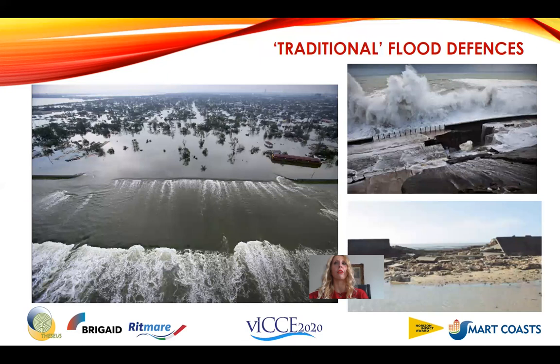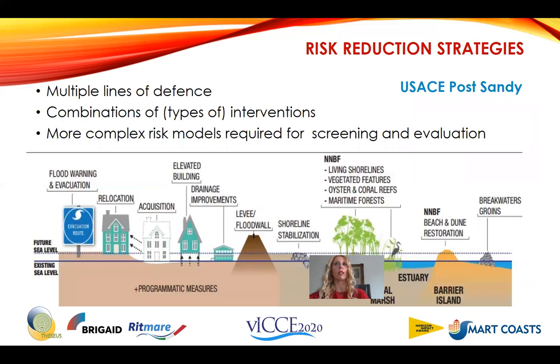Traditional flood defenses have shown their limitations — we see breaches during Hurricane Katrina, storm Becky, and the storm surge at Xynthia. We cannot raise wall height indefinitely, and doing so is negative for ecosystem services and has aesthetic impacts. Globally, we need a new way to plan risk reduction strategies, considering multiple lines of defense and combinations of types of intervention. This in turn requires more complex risk models for screening and evaluation.